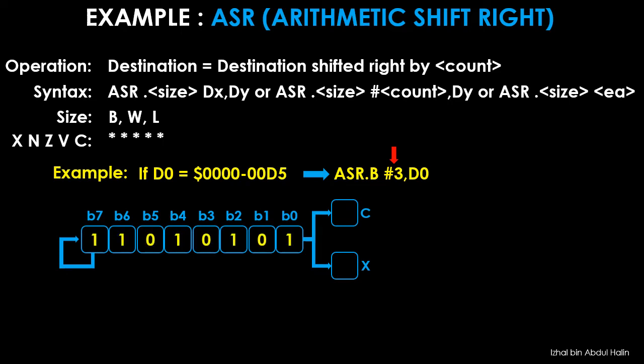Data D5 is loaded into register D0. Then the first shift to the right is executed. This causes the 1 in bit 0 to move into the C and X flags. The 0 in bit 1 is shifted into bit 0, the 1 in bit 2 is shifted into bit 1, and so on. Since the MSB is reconnected to itself, a new 1 is written into bit 7 during the first shift operation. This shifting process is repeated three times.